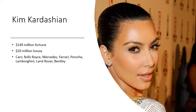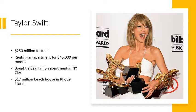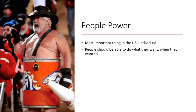In America, we worship celebrities and look up to people based on money. We voted for Donald Trump for president on the idea that he is a billionaire. Someone like Kim Kardashian, from a reality show, has built up a huge fortune — a $149 million fortune, a $20 million house, and cars including a Rolls Royce, Mercedes, Ferrari, Porsche, Lamborghini, Land Rover, and Bentley. Then there's Taylor Swift, who through her talent and musical abilities amassed a great fortune — worth about $250 million, renting an apartment for $45,000 per month, and owning a $27 million apartment in New York City and a $17 million beach house in Rhode Island.